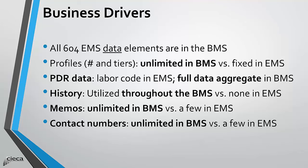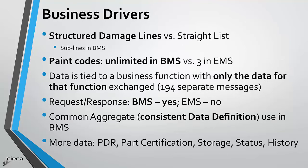The BMS provides unlimited storage for contact information, including cell phones, mobile, corporate and personal email, and corporate and home offices. Structured damage line items within an estimate can reflect assemblies. Paint codes are unlimited. BMS data is aggregated into business functions.